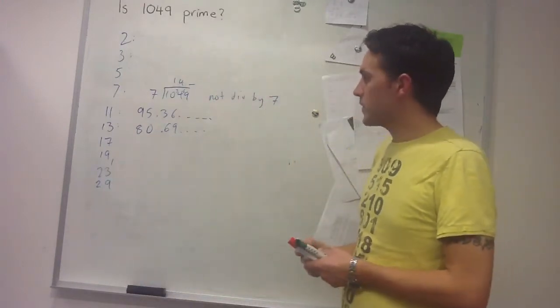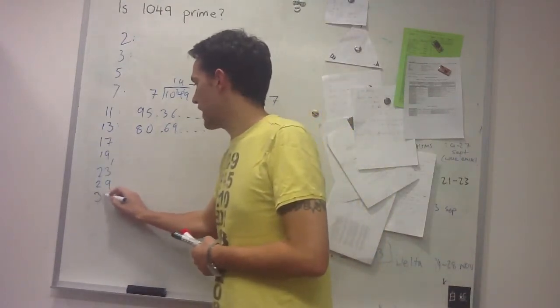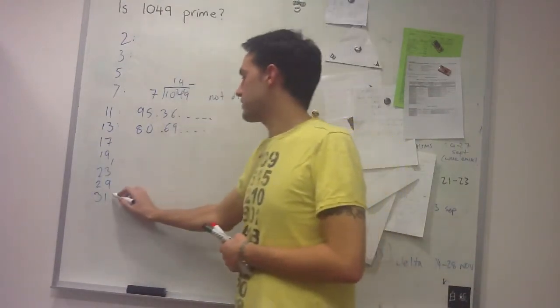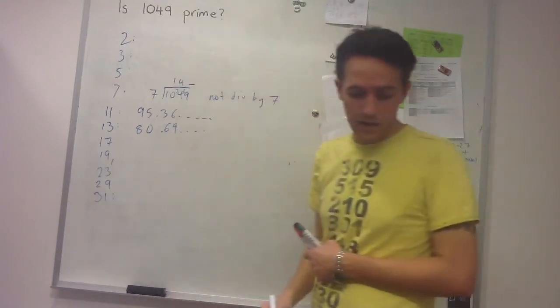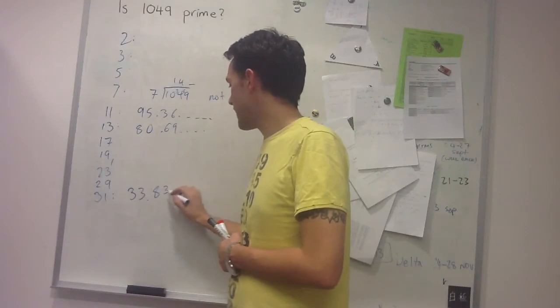And then when I check 31, so let's skip ahead to 31, and I divide 1049 by 31, I get 33.83 something something.